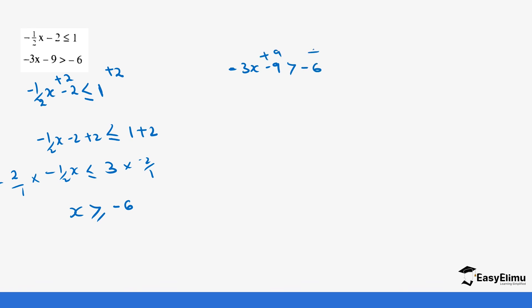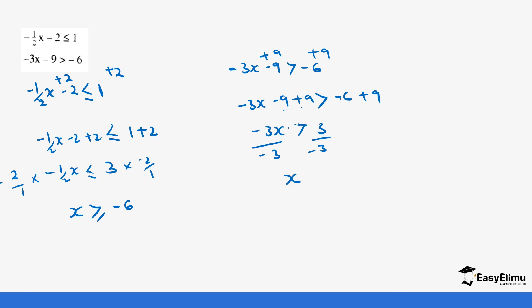The second equation is negative 3x minus 9 is greater than negative 6. We add 9 to both sides: negative 3x minus 9 plus 9 is greater than negative 6 plus 9, giving negative 3x is greater than 3. We divide both sides by negative 3 — since we divided by a negative value — x is less than negative 1.